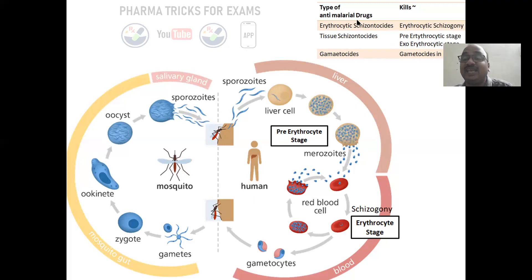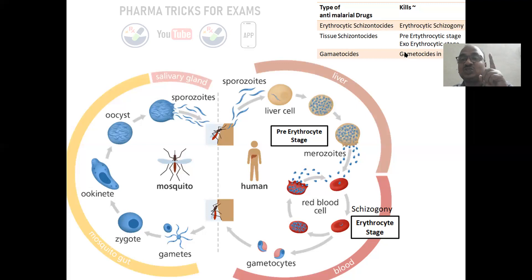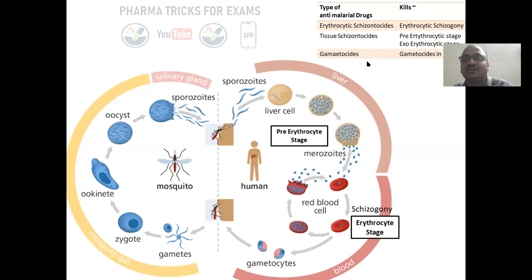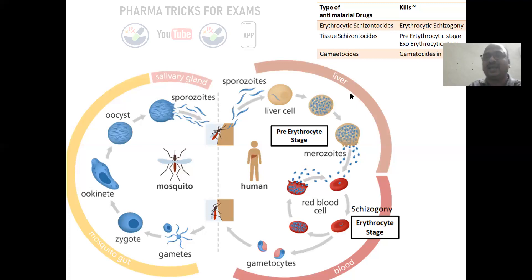Anti-malarial drugs are classified based on which stage they kill: erythrocytic schizontocides kill erythrocytic schizogony; tissue schizontocides act on the pre-erythrocytic stage (exo-erythrocytic stage); and gametocides kill the gametocytes present in the blood. All anti-malarial drugs are classified into these three categories.